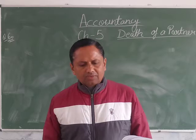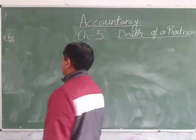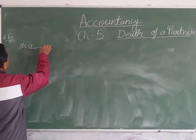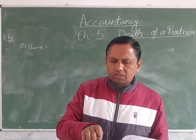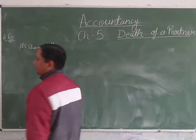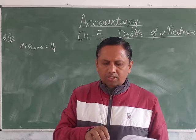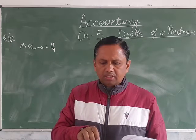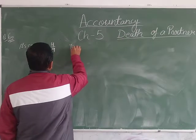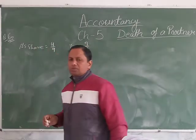ABC are partners in a firm sharing profits in the ratio 4:3:2. A died, so first of all we calculate A's share. A's share is 4:3:2, so A's share is 4/9. A died on 31st December, and the books close on 31st March every year. So the time period is 9 out of 12 months, from 1st April to 31st December.